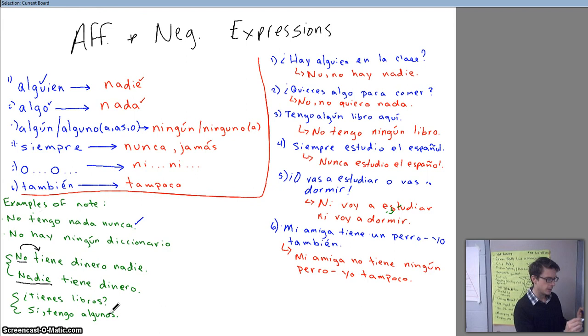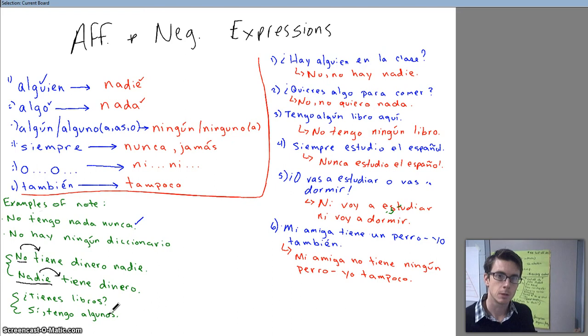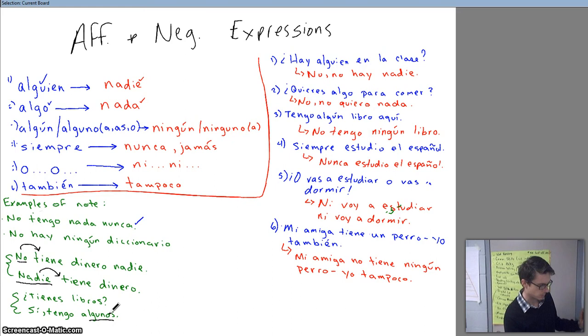And the last one, tienes libros? Tienes libros? Si, tengo algunos. We are using our affirmative expression as a pronoun here. Because, algunos has taken the place of libros. So, it's being used as a pronoun.